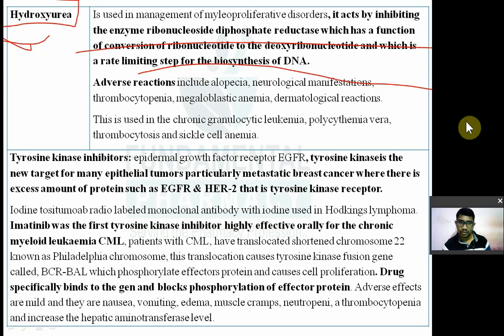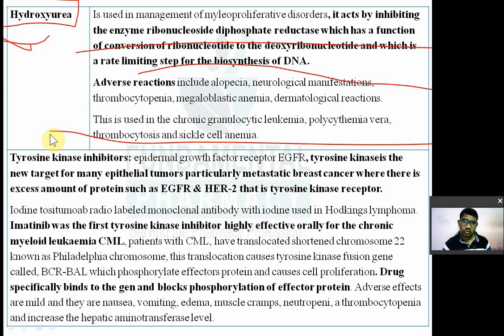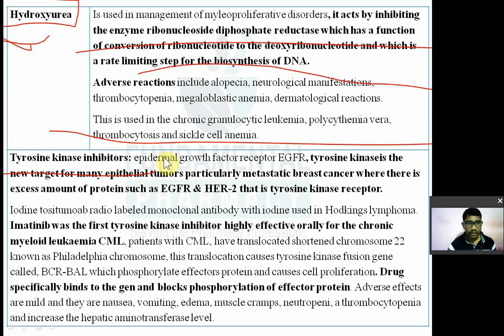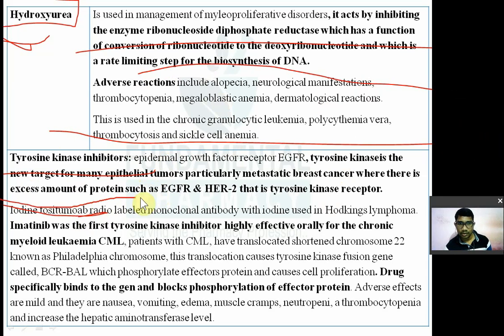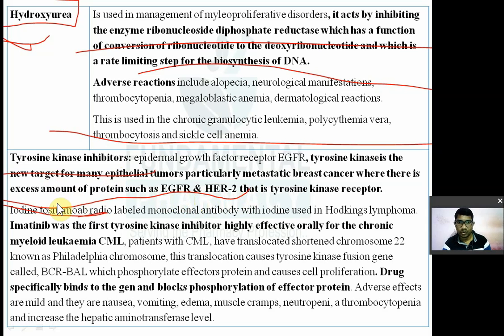Hydroxyurea is used in chronic granulocytic leukemia, polycythemia, thrombocytopenia, and sickle cell anemia. Tyrosine kinase inhibitors target the epidermal growth factor receptor (EGFR). EGFR and HER2 are tyrosine kinase receptors that are overexpressed in certain cancers, particularly metastatic breast cancer, and are a new target for anticancer therapy.